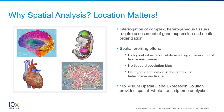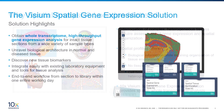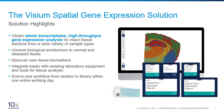Spatial profiling provides no tissue dissociation bias for transcriptome analysis and cell type identification in the context of heterogeneous tissue. The Visium Spatial Gene Expression solution from 10x Genomics provides spatial whole transcriptome analysis by overlaying total mRNA gene expression data onto a morphological H&E image. With Visium, researchers can obtain whole transcriptome, high-throughput gene expression analysis from the whole tissue section and from a wide variety of sample types. This solution enables researchers to unravel the biological architecture in normal and diseased tissues and discover new tissue biomarkers.